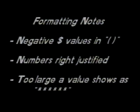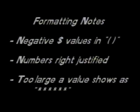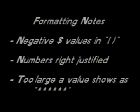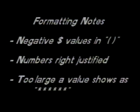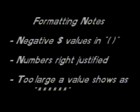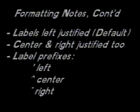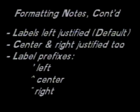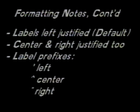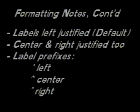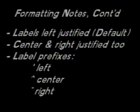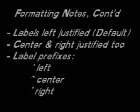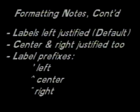I've got some extra notes on formatting. Negative currency values are shown in parentheses. Numbers can only be right justified. If the formatted value is too large for a cell, a string of asterisks is shown. The default format for labels is left justified, as shown by the apostrophe. Other label formats are possible, including center and right justified. To get them, type one of these label prefix characters at the start of the label.